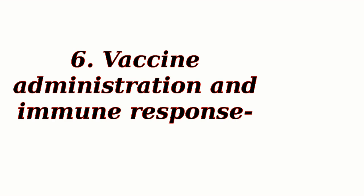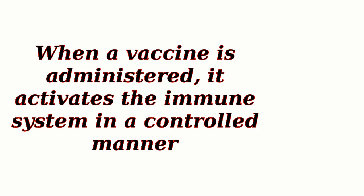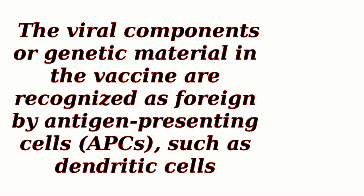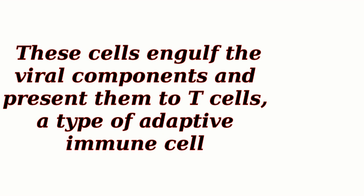Vaccine administration and immune response. When a vaccine is administered, it activates the immune system in a controlled manner. The viral components or genetic material in the vaccine are recognized as foreign by antigen-presenting cells, APCs, such as dendritic cells. These cells engulf the viral components and present them to T cells, a type of adaptive immune cell.